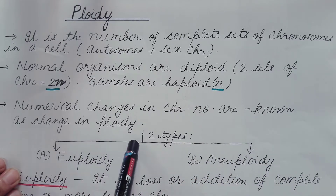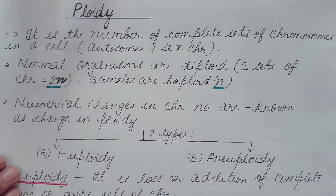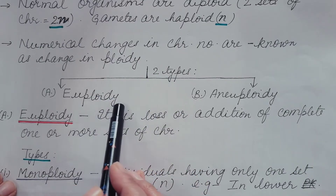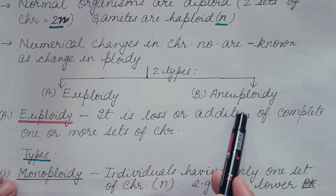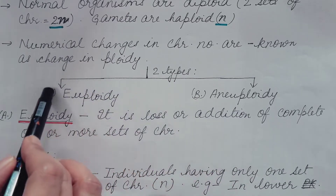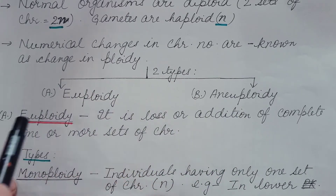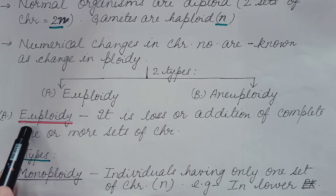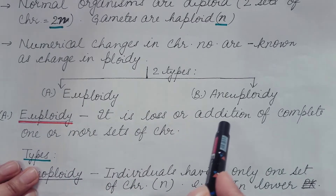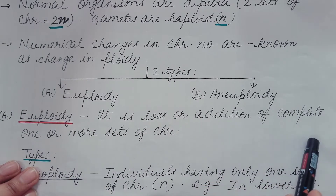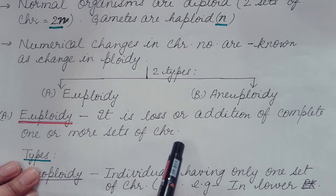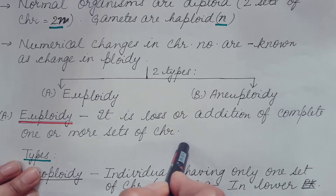Numerical changes in chromosome number are known as changes in ploidy. This is of two types: euploidy and aneuploidy. In this video we will talk about euploidy. Euploidy is the loss or addition of one or more complete sets of chromosomes.